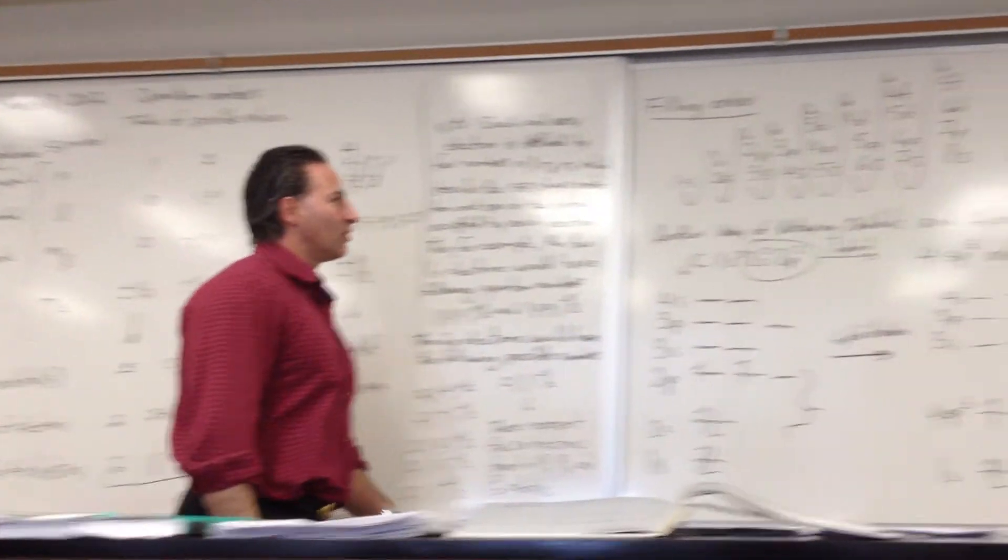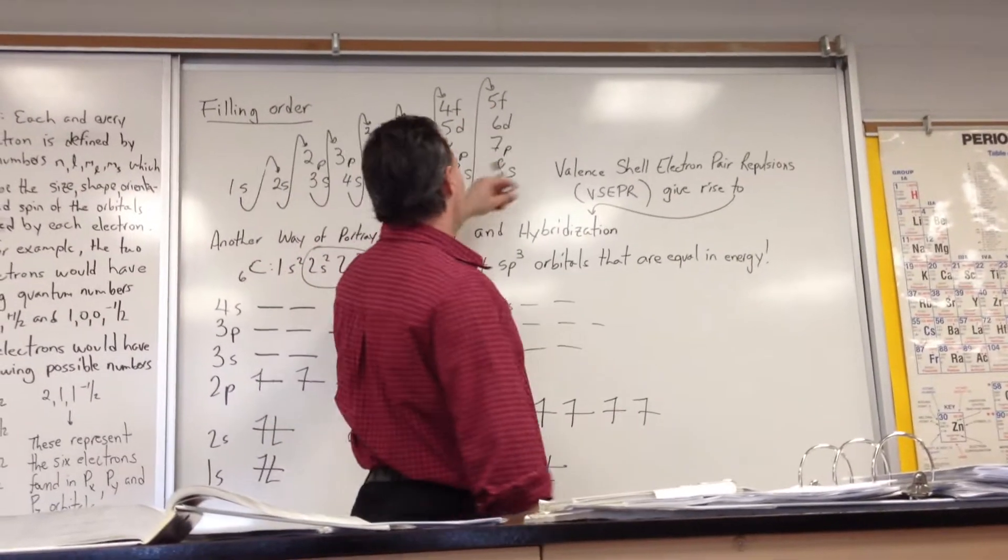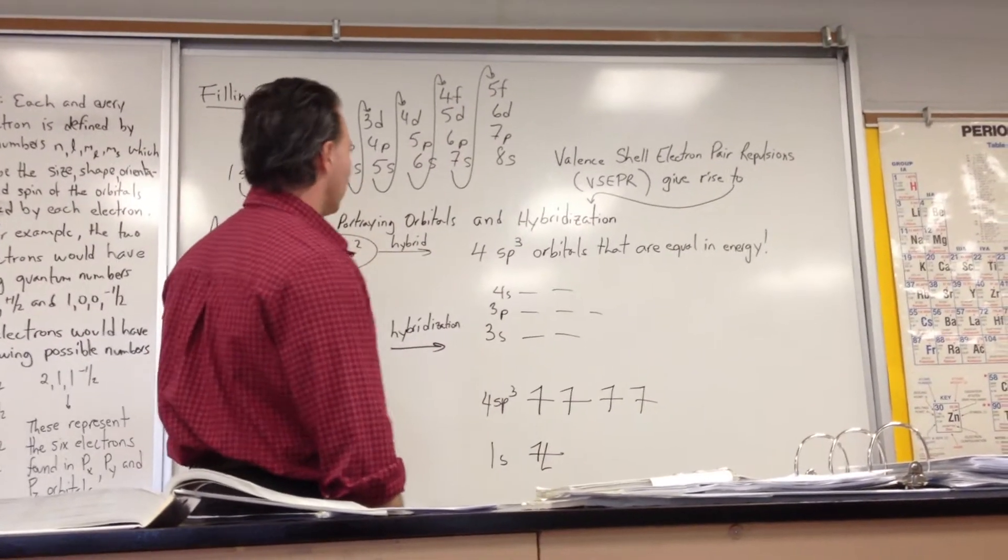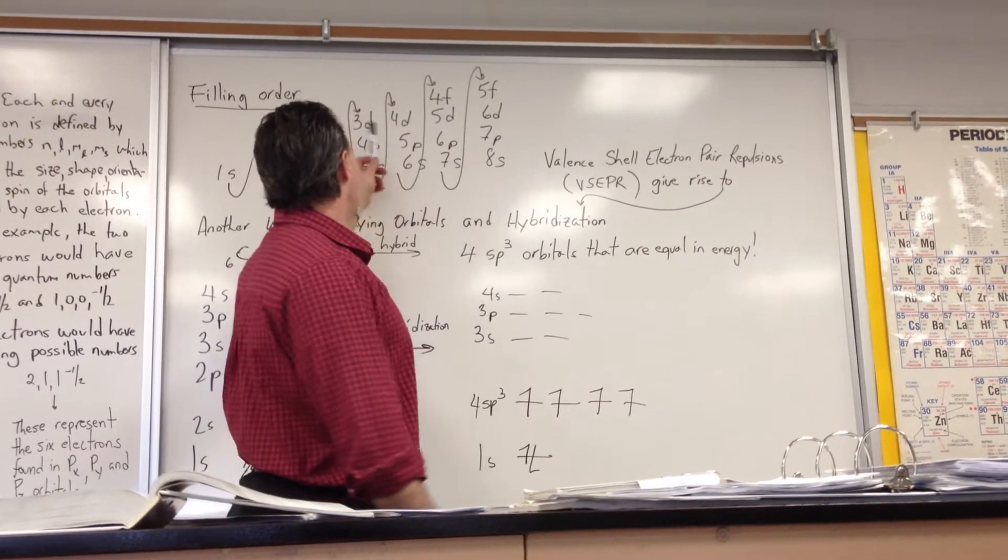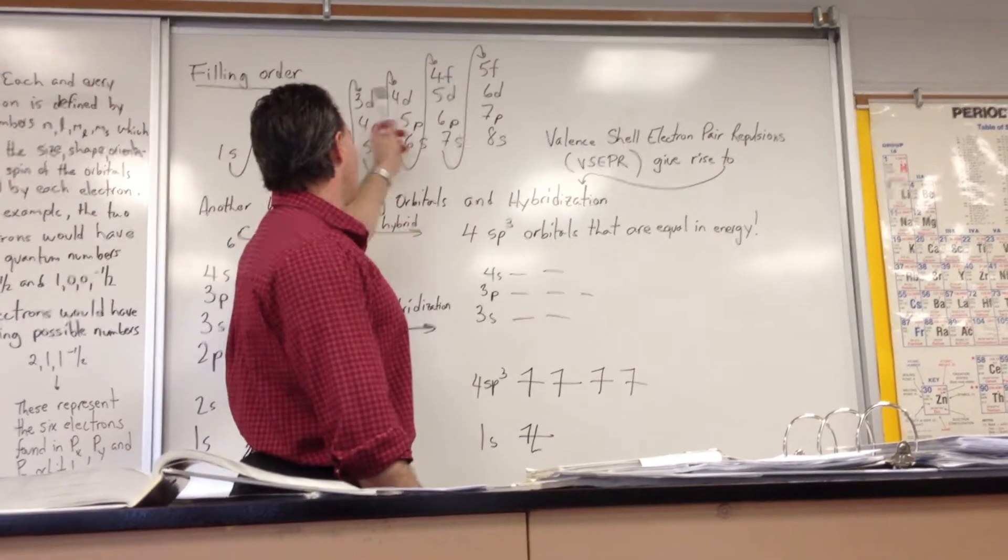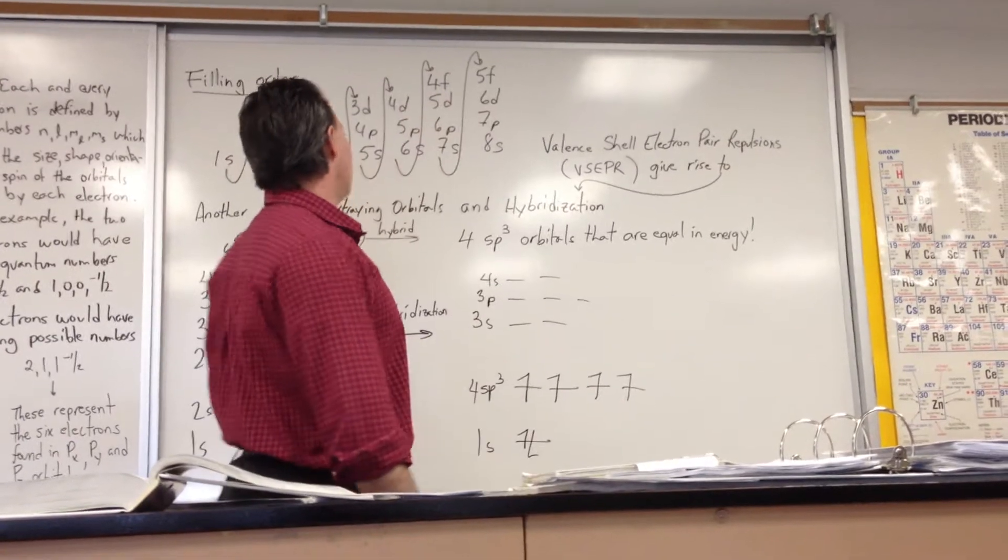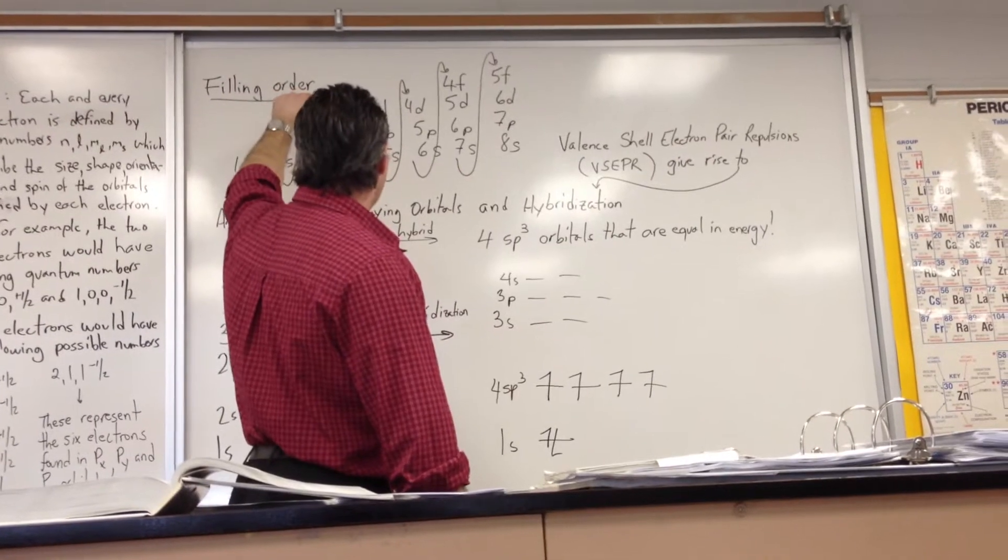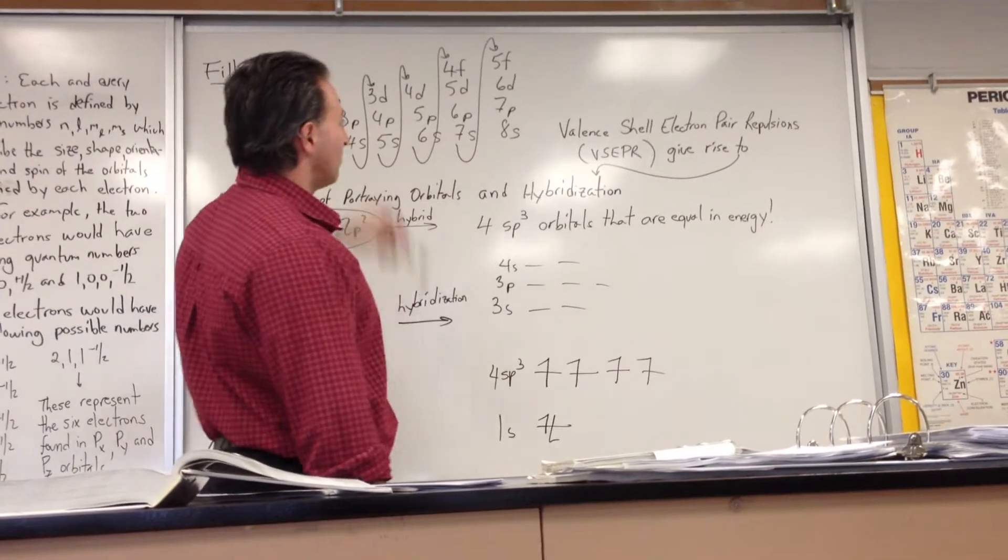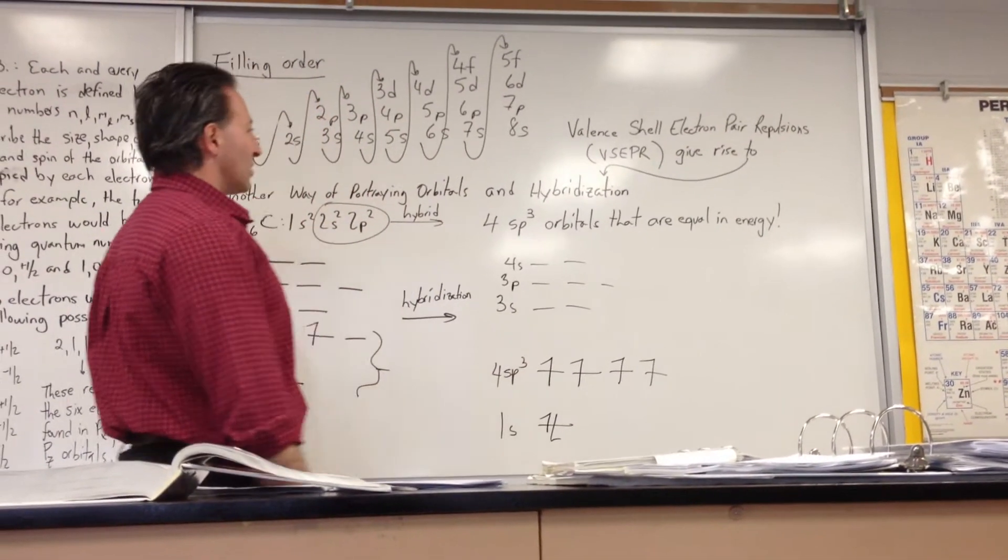This is the filling order, which I've described before. This is the mnemonic I always use to help you remember how the filling order works. Numbers 1 through 8, 2 through 7, 3 through 6, and 4 through 5, s, p, d, f, and you draw arrows from the bottom of each column to the top of the next one. That's the filling order of the shells, with few exceptions.